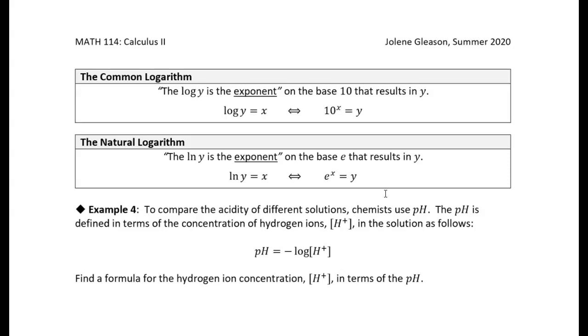One is called the common logarithm, and it's the base 10 log. So a logarithm with a base 10 is the common logarithm, and the other frequently used logarithm is the natural logarithm, which has a base of e, which is Euler's constant.